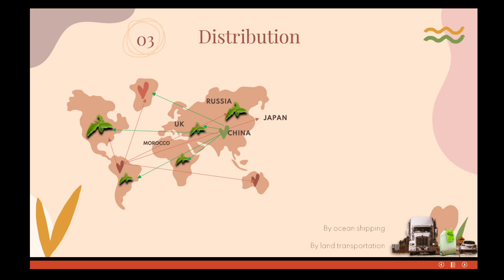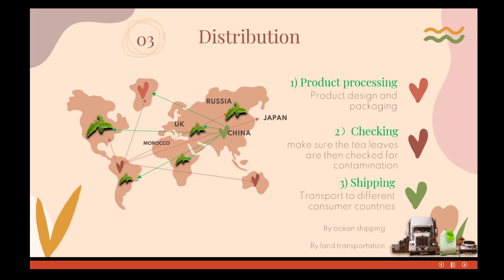The third stage of the life cycle of the tea is called distribution. After the production process, the tea will start the distribution part, which is more related to shipping and product packaging by different companies. The tea is exported to important countries with minimal processing and then blended by tea companies, which produce different types of ready-to-use teas for customers around the world. The tea leaves are then checked for contamination in airtight containers before being exported to major foreign markets such as Russia, Morocco, Japan, and Britain.